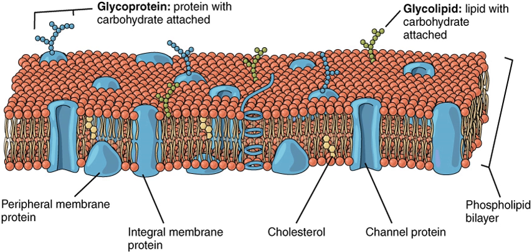Membranes in cells typically define enclosed spaces or compartments in which cells may maintain a chemical or biochemical environment that differs from the outside. For example, the membrane around peroxisomes shields the rest of the cell from peroxides, chemicals that can be toxic to the cell, and the cell membrane separates a cell from its surrounding medium. Peroxisomes are one form of vacuole found in the cell that contain by-products of chemical reactions. Most organelles are defined by such membranes and are called membrane-bound organelles.